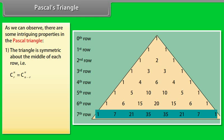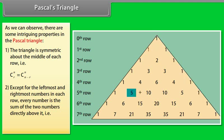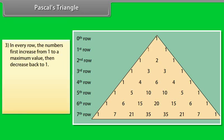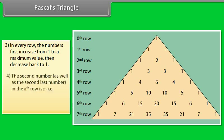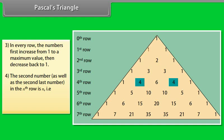That is, nCr is equal to nC(n − r). Except for the leftmost and rightmost numbers in each row, every number is the sum of the two numbers directly above it. That is, nCr is equal to (n−1)C(r−1) + (n−1)Cr. In every row, the numbers first increase from 1 to a maximum value, then decrease back to 1. The second number as well as the second last number in the nth row is n. That is, nC1 = nC(n−1) = n.